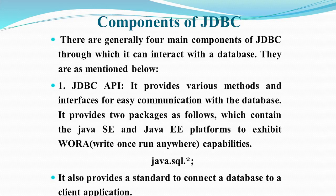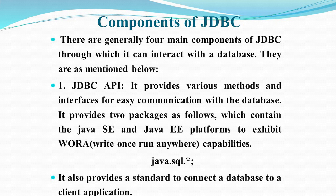Now let us understand the components of JDBC. There are generally four main components through which JDBC can interact with the database. The first is the JDBC API, which provides various methods and interfaces for easy communication with the database. It provides two packages supporting Java SE and Java EE platforms to exhibit WORA — Write Once Run Anywhere — capabilities. For example: java.sql.* It also provides a standard to connect a database to a client application.